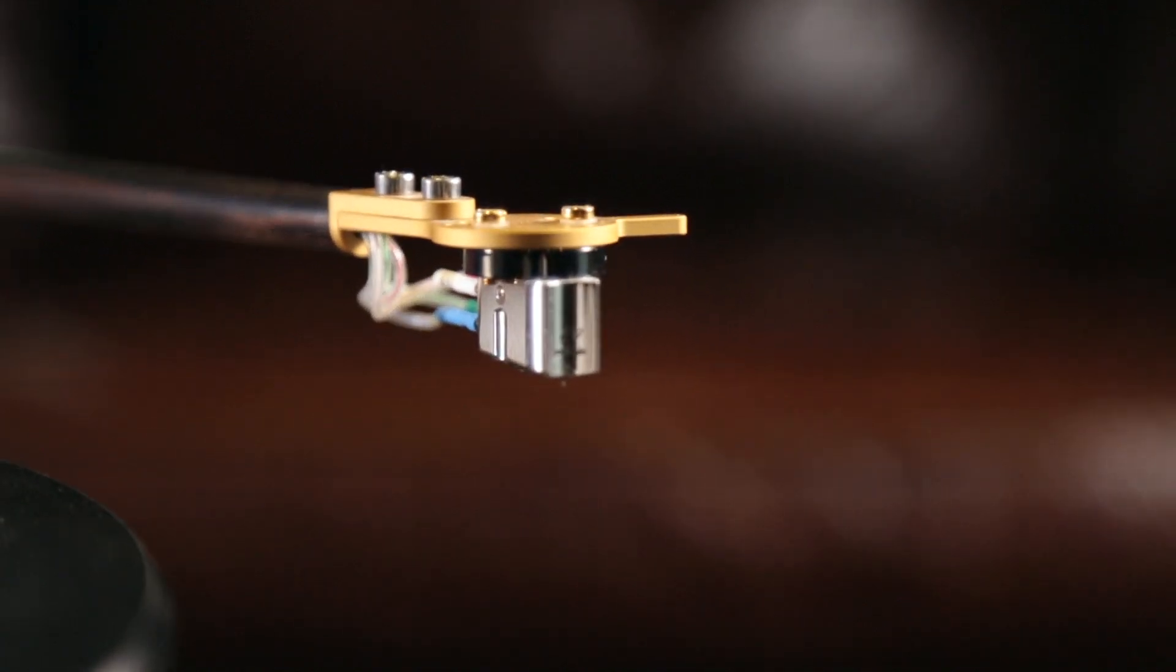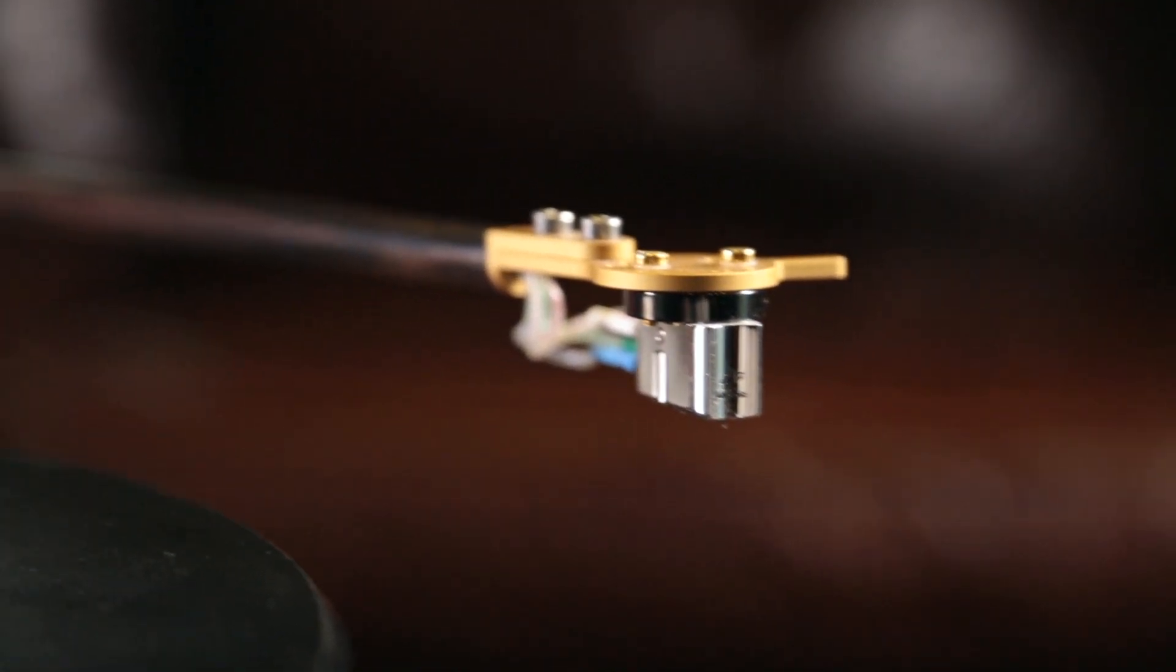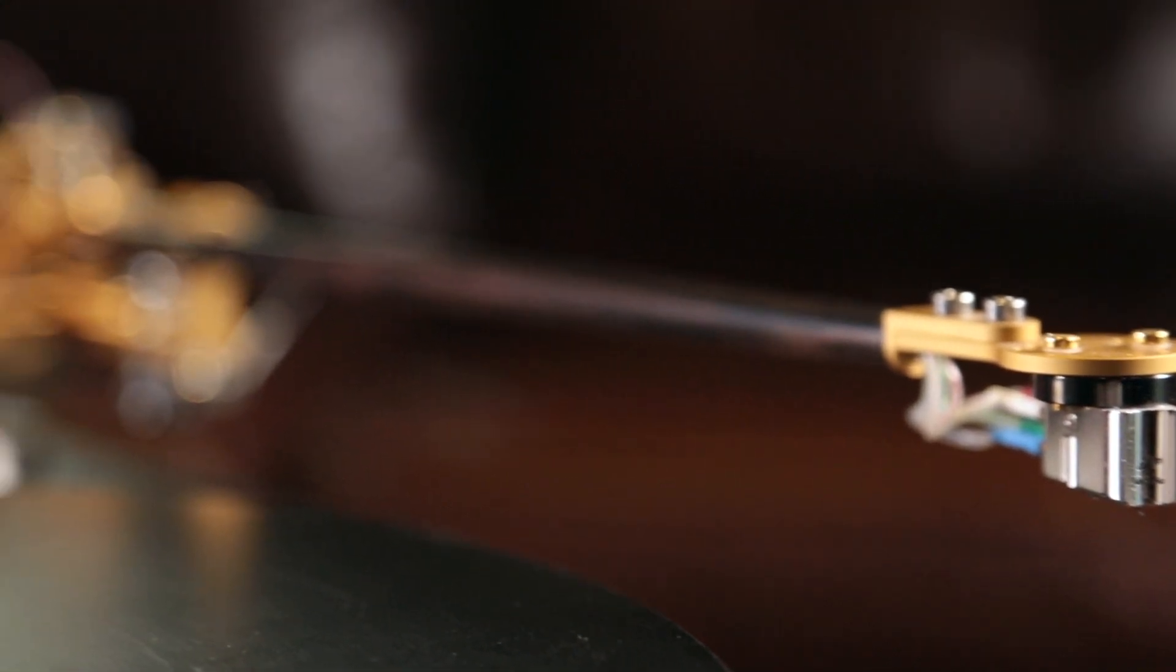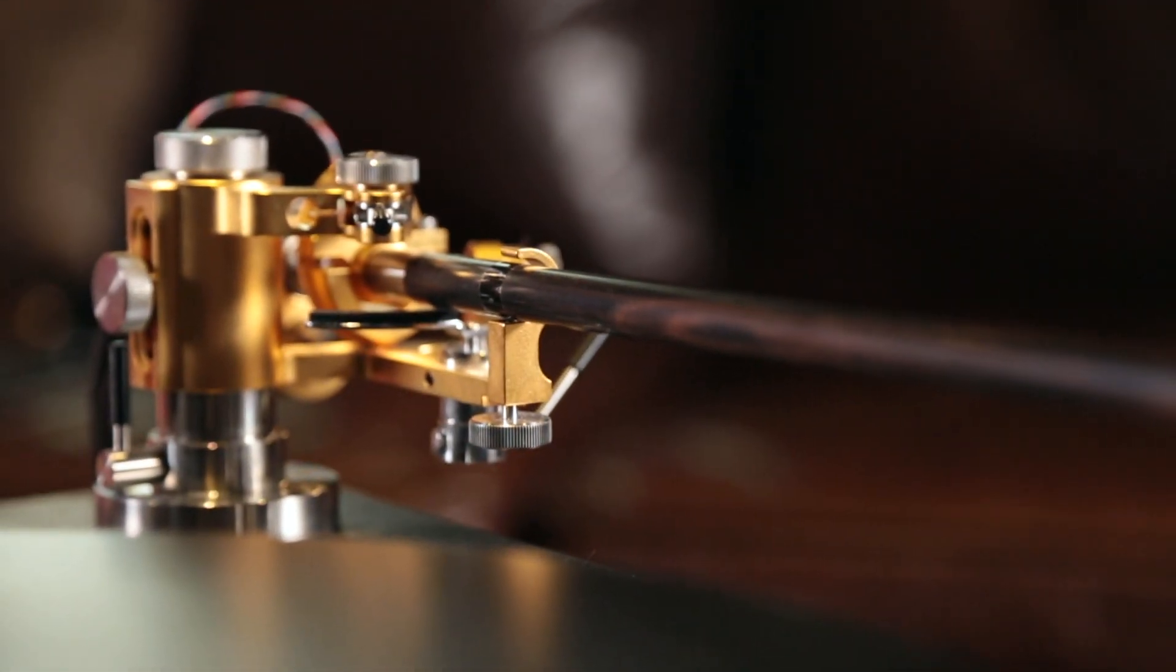All phono cartridges are made by hand and therefore the stylus may not be actually perfectly perpendicular to the cantilever or the cartridge body. The actual stylus is very small and it is literally impossible to visually determine how it is actually sitting on the record grooves.